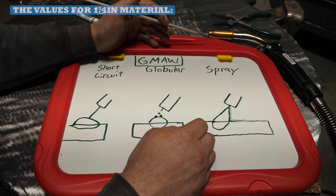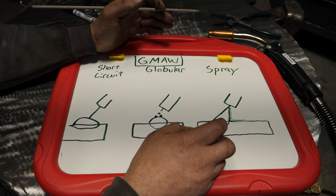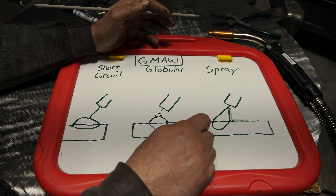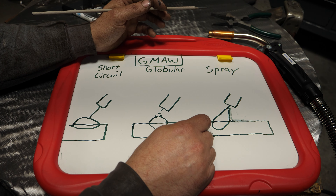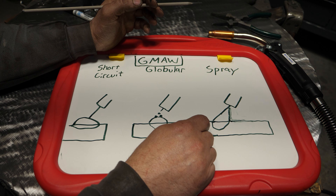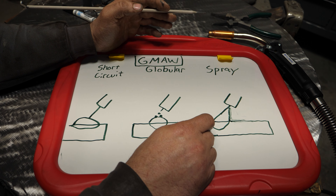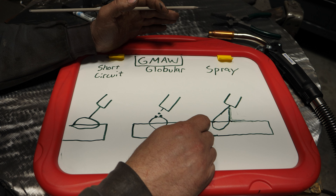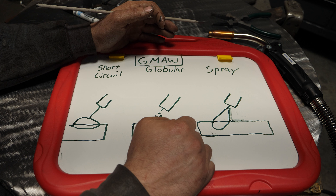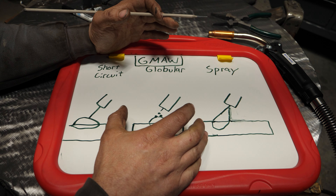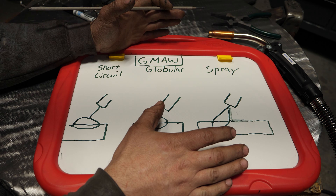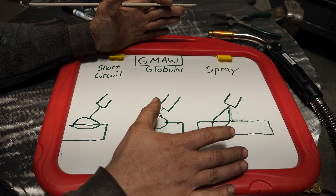Spray also requires special shielding gases. Universally, C25 will not work unless you put a tremendous amount of power and voltage behind it. C10 — which is 90% argon / 10% CO2 — will work, and there are all sorts of other mixtures, including some with oxygen and hydrogen, that will also help a welder get into spray mode transfer. I'm going to show you through arc footage the exact difference, and this will all make 100% sense because you'll see it firsthand.